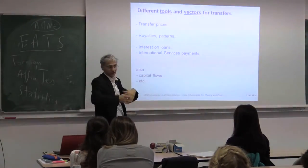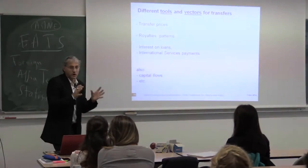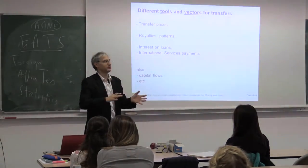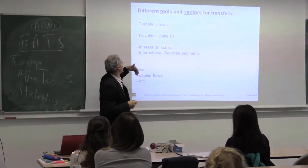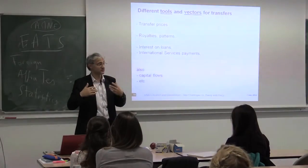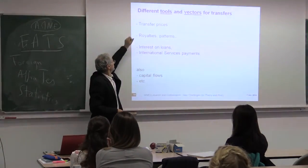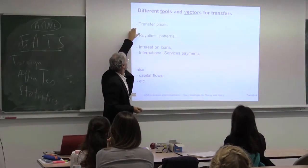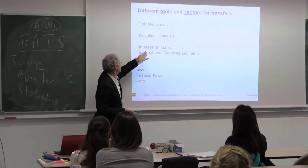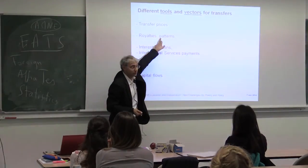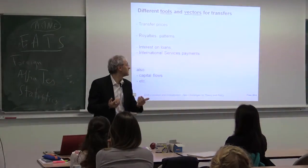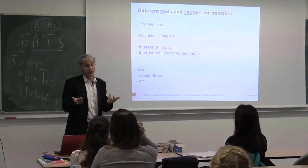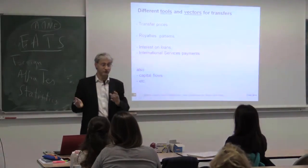Vectors for transfers include transfer prices — conventional prices fixed inside the group — agreements on royalties, patents, payments, interest on loans, international services payments. These can be very important vectors of transfers. Also capital flows and capital transfers can serve as vectors. The leverage for transfers is the distinction between control and ownership, which is very important.